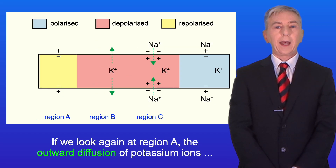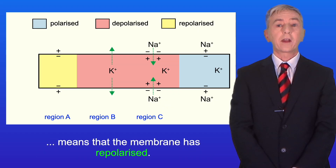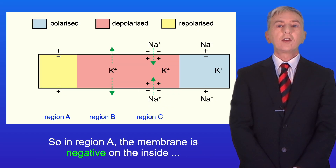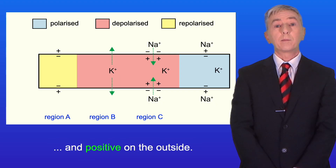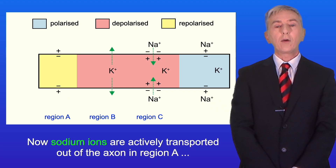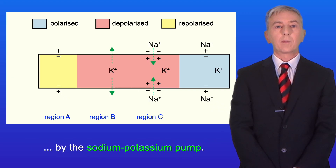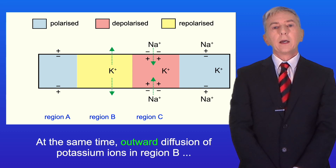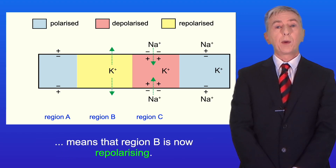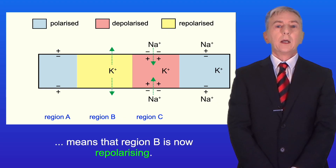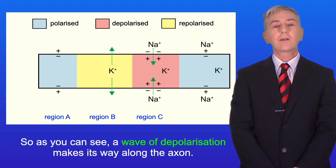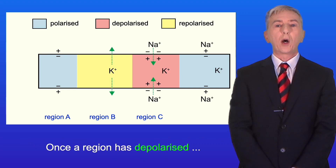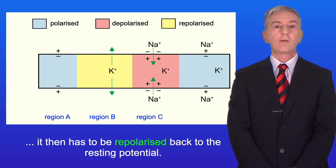If we look again at region A, the outward diffusion of potassium ions means that the membrane has repolarized — so in region A the membrane is negative on the inside and positive on the outside. Sodium ions are then actively transported out of the axon in region A by the sodium-potassium pump, so region A is now polarized back to its resting potential. At the same time, outward diffusion of potassium ions in region B means that region B is now repolarizing. So as you can see, a wave of depolarization makes its way along the axon, and once a region has depolarized it then has to be repolarized back to the resting potential.